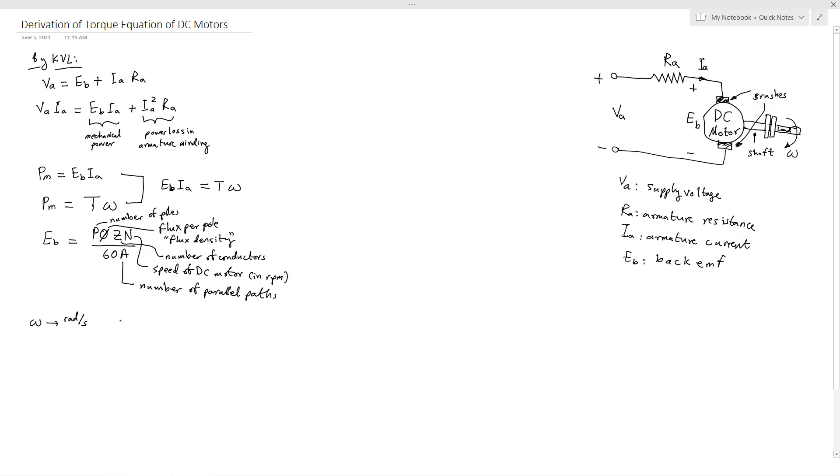Also to get omega, here omega is radian per second and N is revolution per minute, so how to relate both variables. To get omega, for example we have N, so here omega will equal N, the unit is revolution per minute. So to get rid of minute we have to multiply by 1 minute divided by 60 seconds.